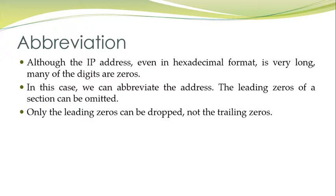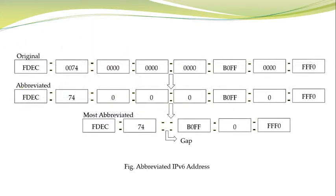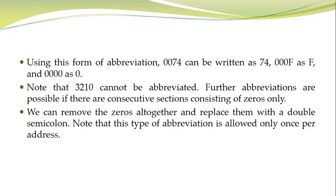Abbreviation for IPv6 addresses: although the IPv6 address even in hexadecimal format is very long, many of the digits are 0s. In this case, we can abbreviate the address. The leading 0s of a section can be omitted — only the leading 0s can be dropped, not the trailing 0s. The figure shows abbreviated IPv6 addresses. Using this form of abbreviation, 0074 can be written as 74, 000F as F, and 0000 as 0.